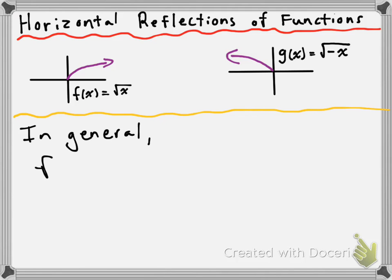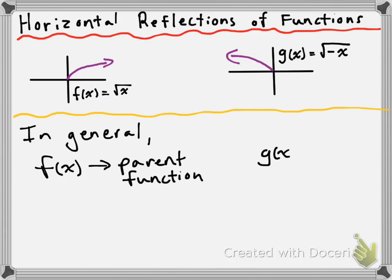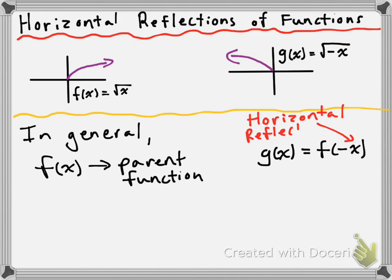So in general, for horizontal reflections, if f of x is a parent function, then g of x is equal to f of negative x is a horizontal reflection of f of x. To get g of x as a horizontal reflection, you take your parent function f and you replace x with negative x, and that will be a horizontal reflection. So this has been horizontal and vertical reflections of functions. Hope it helps.